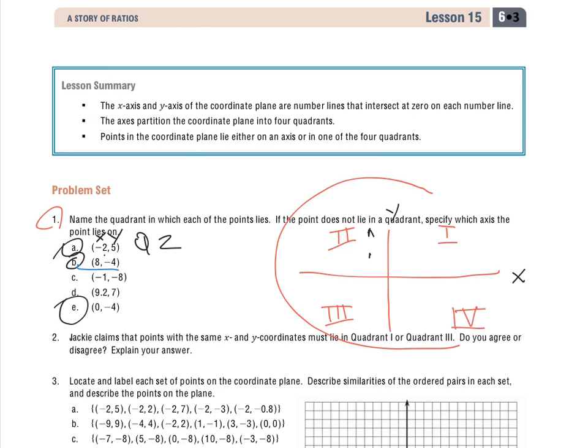For B, I have 8, negative 4, so if I went over 8 on the x, down 4, it's going to be down in here somewhere. It's not exact, but it's giving me just the quadrant, so I know that that's quadrant 4.